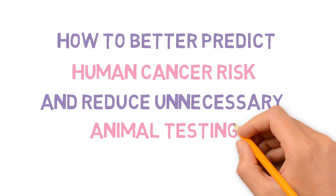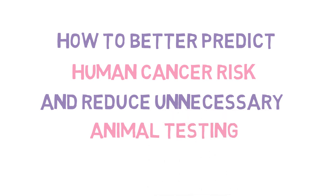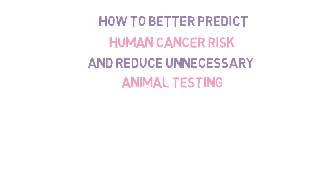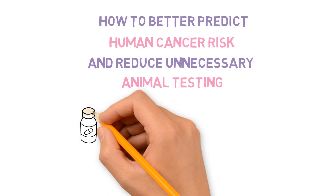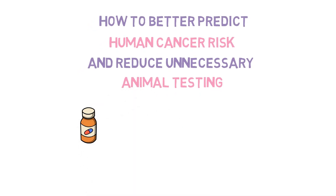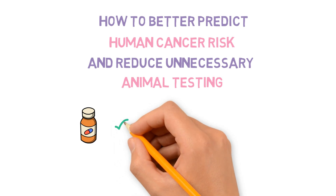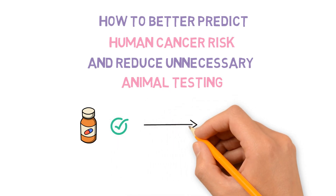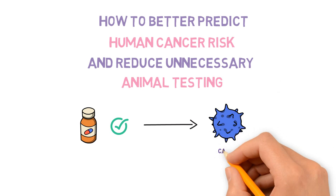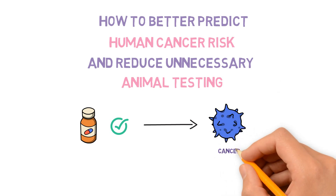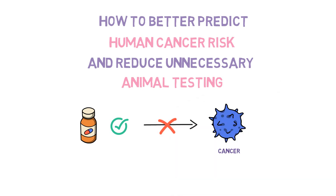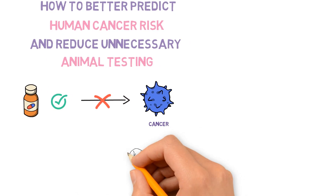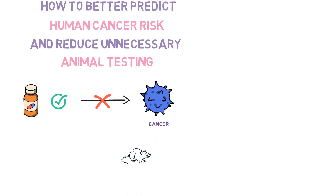How can we better predict human cancer risk and reduce unnecessary animal testing? When the pharmaceutical industry develops a new drug or product, they need to be sure it will be safe for humans, and most of the time this includes assessing the risk of cancer. But how should this be done?